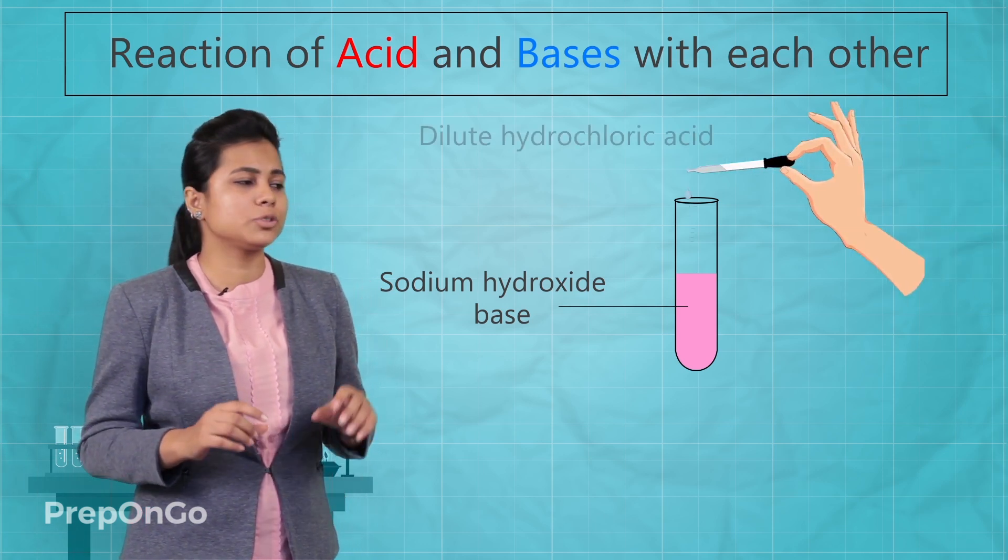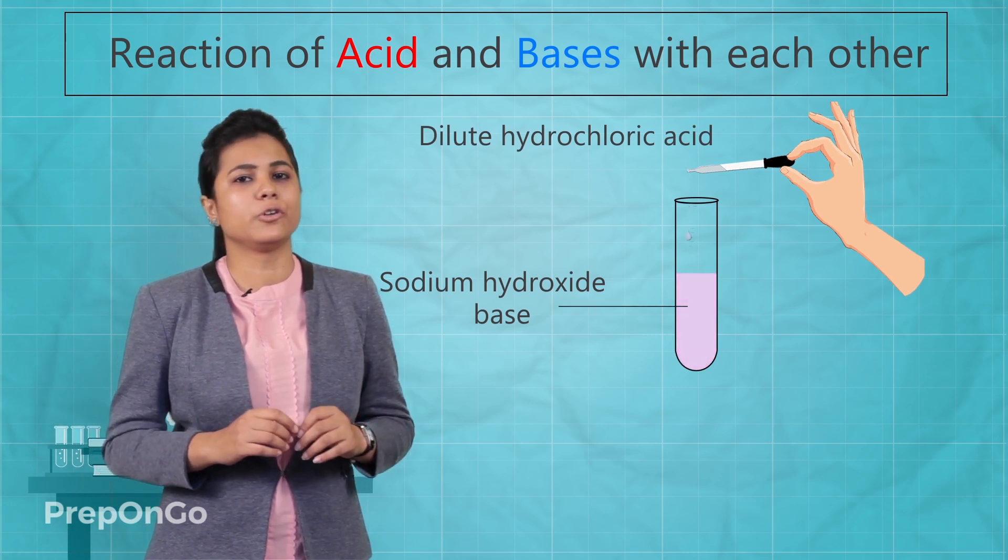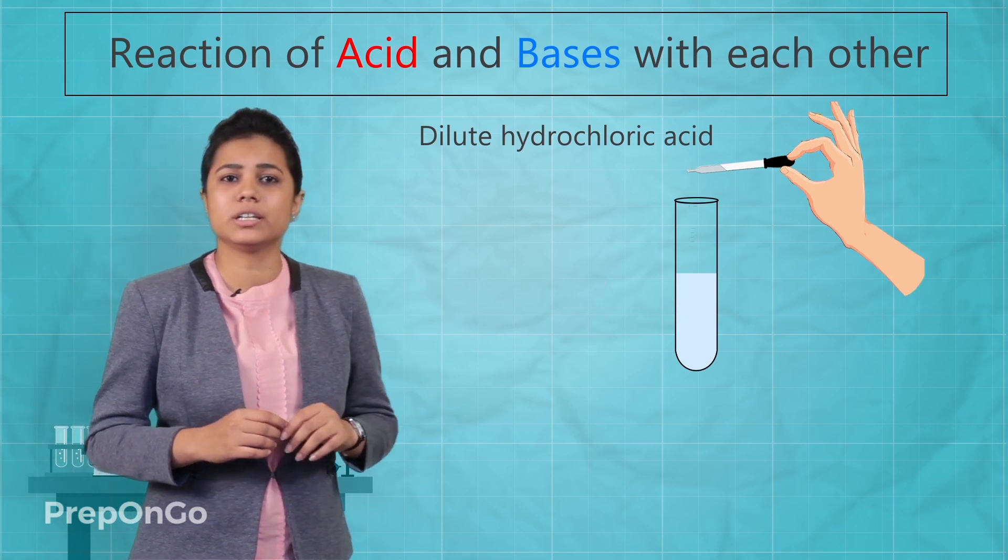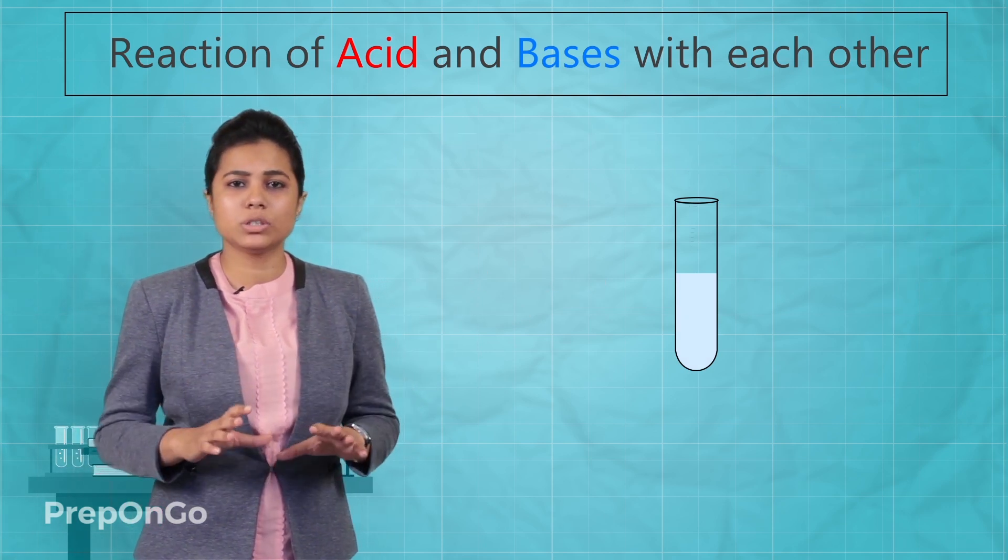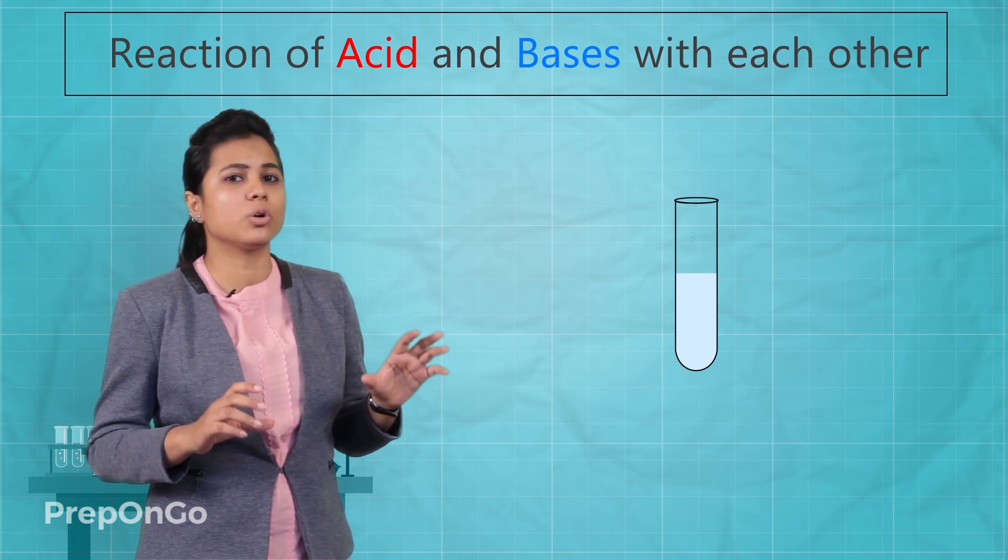Now put a few drops of dilute hydrochloric acid into it with the help of a dropper. You are going to see that the solution has turned colorless which shows that the hydrochloric acid had neutralized the sodium hydroxide.